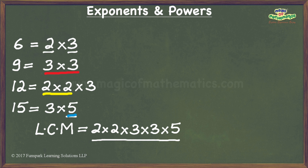Examining the prime factorization of the LCM, we can see that we have a pair of 2s and a pair of 3s. However, there is only one 5 and hence we can't form a pair of 5s. Hence, this product which corresponds to the LCM of the given numbers is not a perfect square.